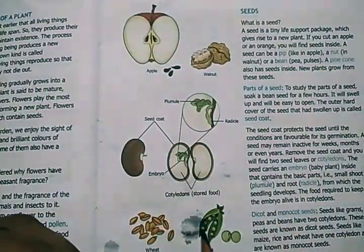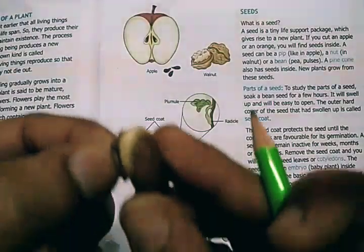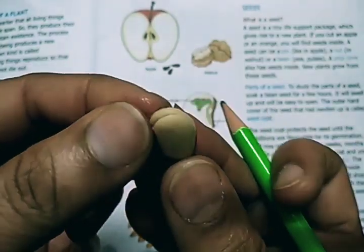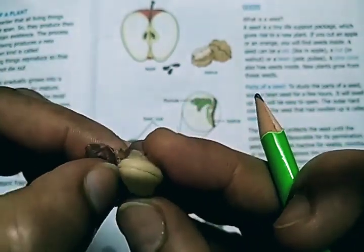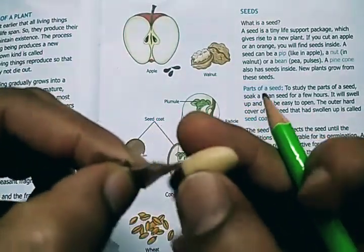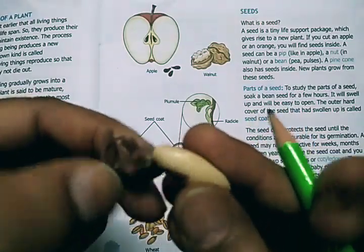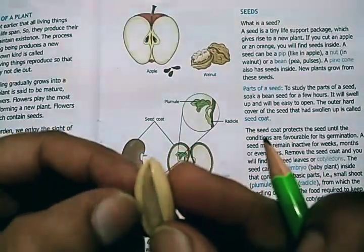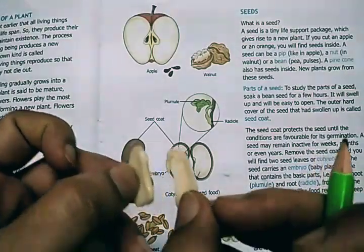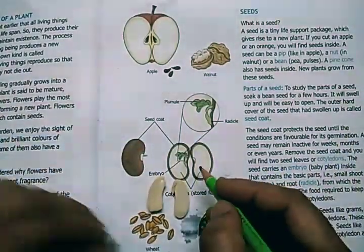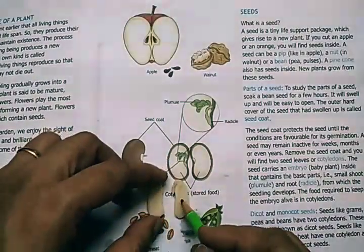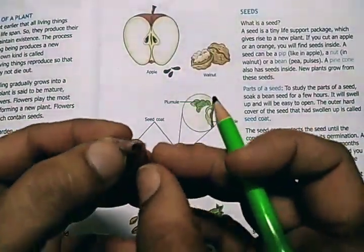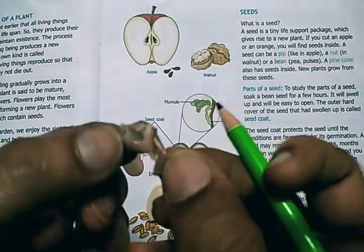Now here I have a rajma seed. This outer part is the seed coat — you can see the brown part here. It has become soft after soaking so we can open it easily. This is the seed coat. You can see how easily I can open it up and split it into two.